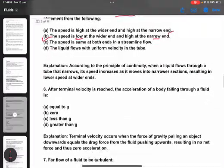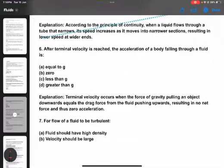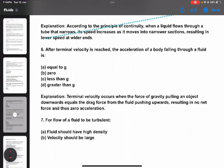Question number six: The terminal velocity reached by a body falling through a fluid. Options are: acceleration equals G, B is zero, C is less than G, D is greater than G. At terminal velocity, the force of gravity on an object is balanced, so the answer is B: zero acceleration.